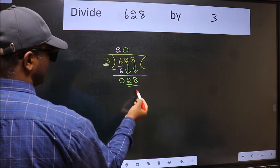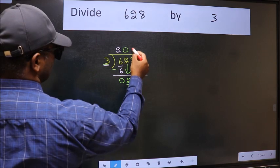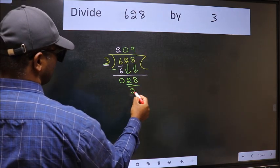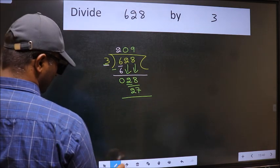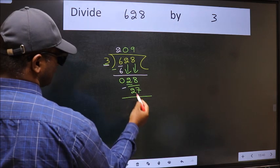Now 28. A number close to 28 in 3 table is 3 nines 27. Now we should subtract. We get 1.